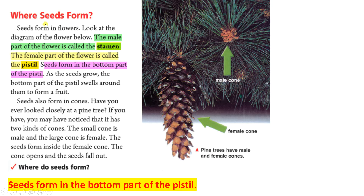Where seeds form. Seeds form in flowers. Look at the diagram of the flower below. The male part of the flower is called the stamen. The female part of the flower is called the pistil. Seeds form in the bottom part of the pistil. As the seeds grow, the bottom part of the pistil swells around them to form a fruit. Seeds also form in cones. Pine trees have two kinds of cones: the small cone is male and the large cone is female. The seeds form inside the female cone. The cone opens and the seeds fall out.